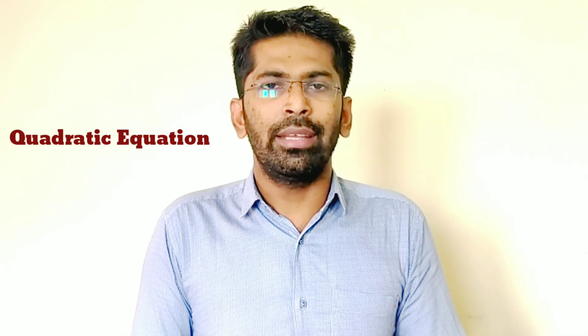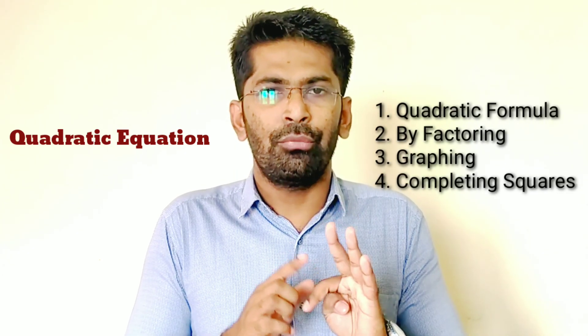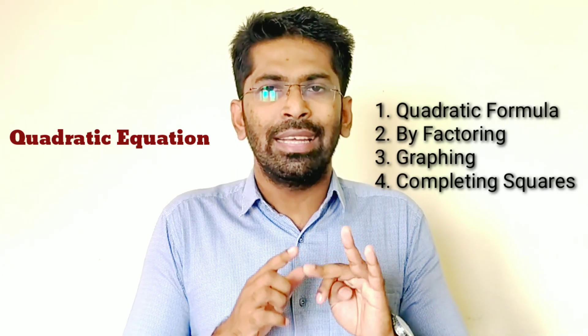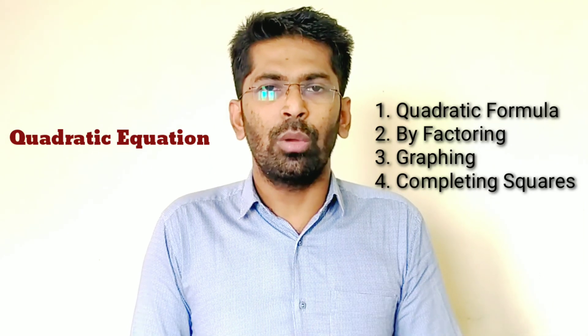A complete quadratic equation contains the term with nonzero coefficient of the second and first power of the unknowns. There are several methods for solving a quadratic equation, namely using the quadratic formula, factoring, graphing, and completing the square.